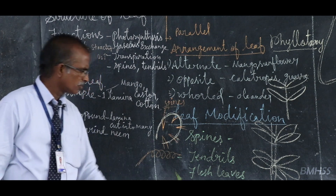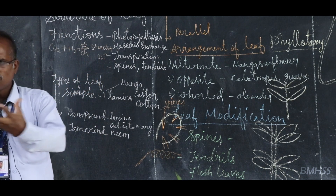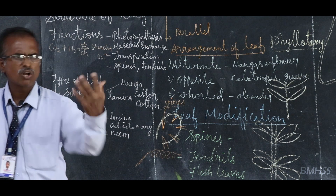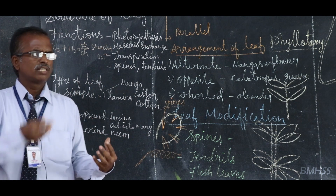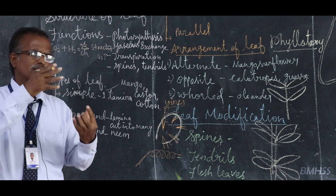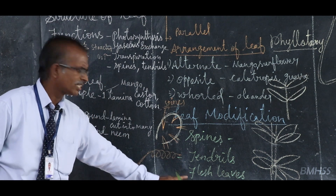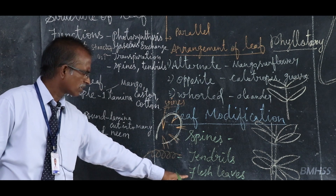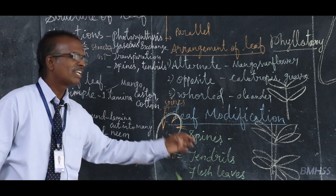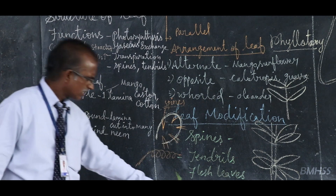The next modification is fleshy leaves. We eat onions — onions store food in the leaf part. Those leaves are called fleshy leaves.